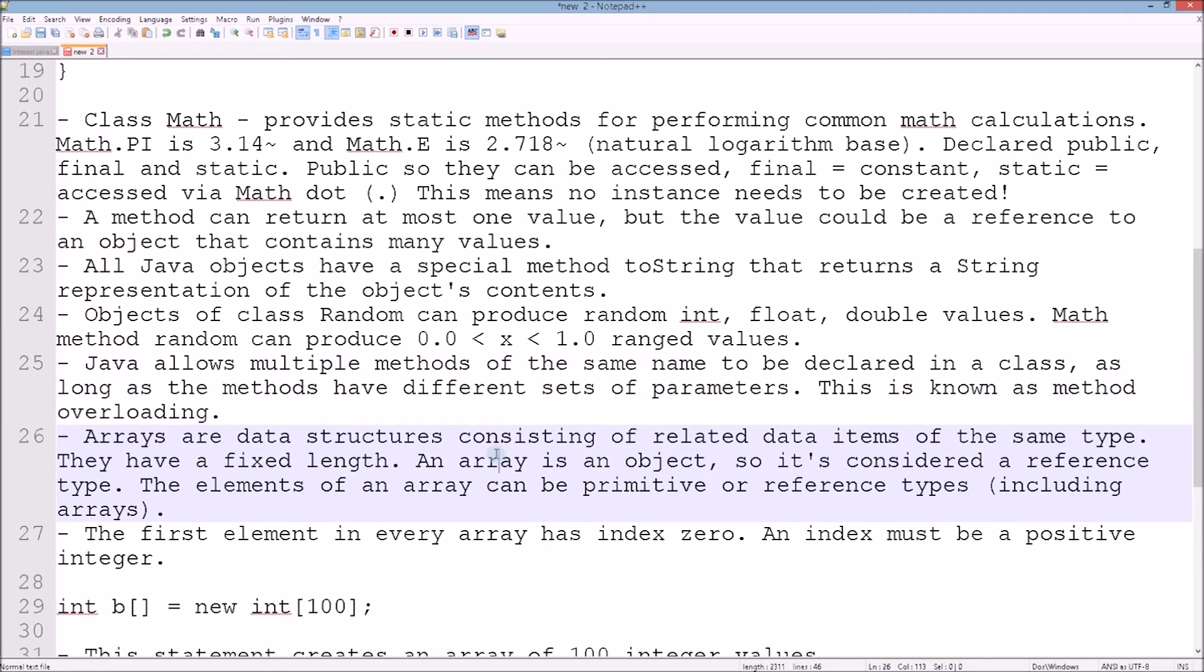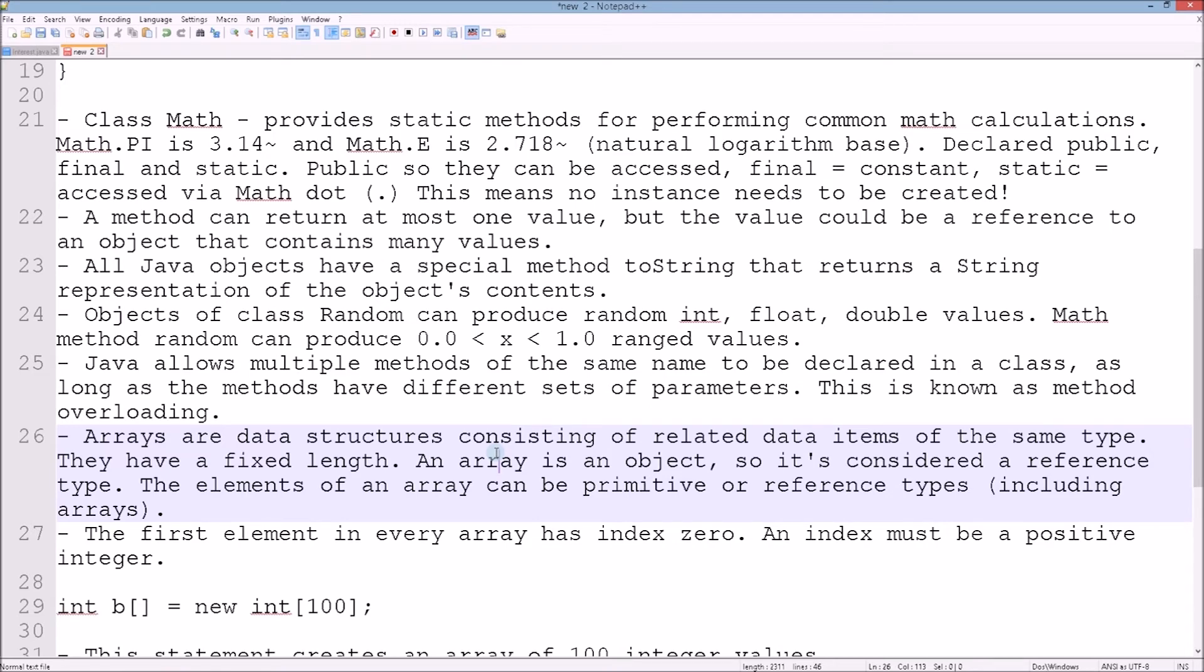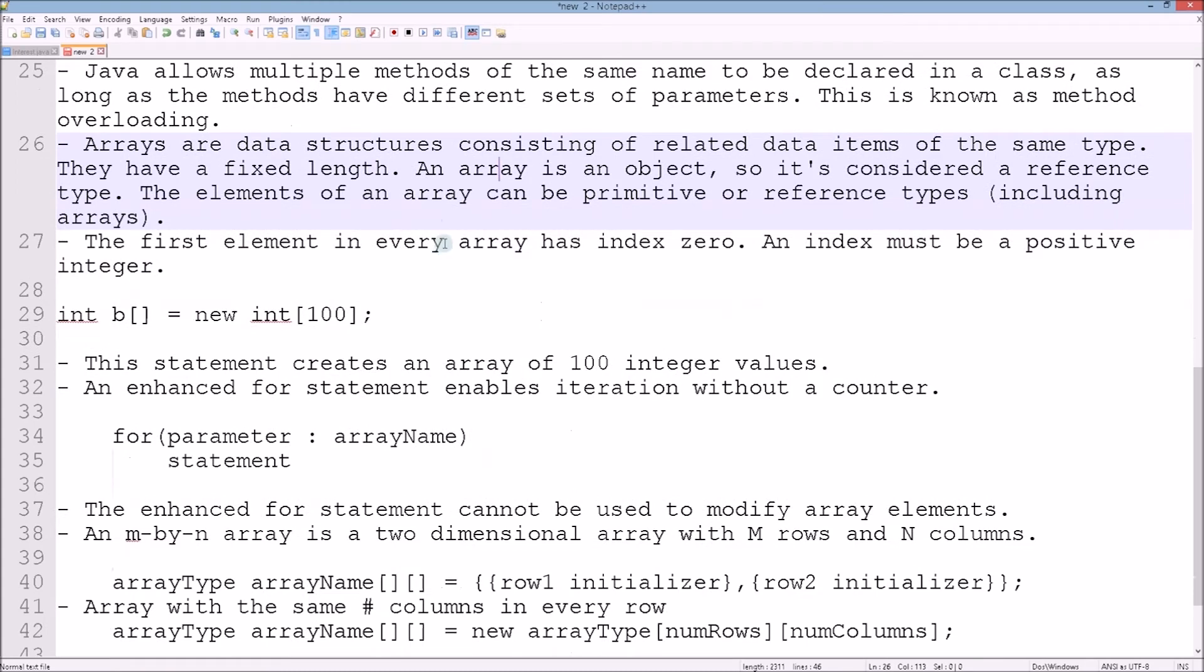Arrays are data structures consisting of related data items of the same type. They have a fixed length. An array is an object, so it's considered a reference type. The elements of an array can be primitive or reference types, including other arrays. The first element in every array has an index value zero. An index must be a positive integer - a non-negative integer.